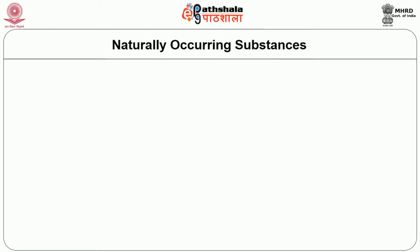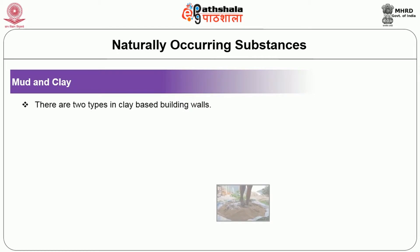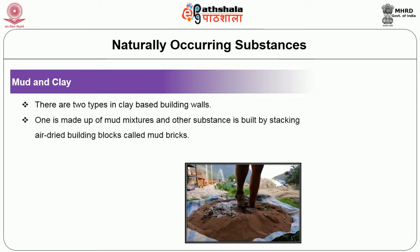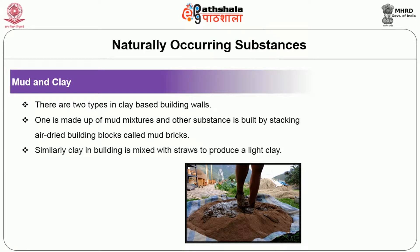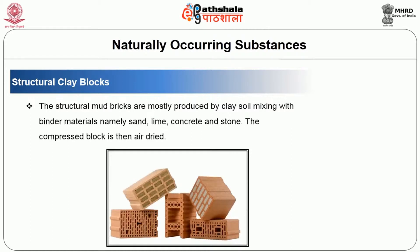Naturally occurring substances: The first is mud and clay. There are two types of clay-based building walls — one is made up of mud mixtures and other substances built by stacking air-dried building blocks called mud bricks, and the other is clay mixed with straw to produce light clay. Next is structural clay blocks, which are mostly produced by mixing clay soil with binder materials namely sand, lime, concrete and stone.